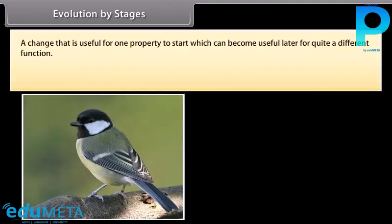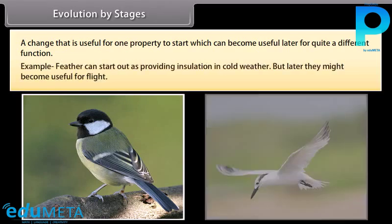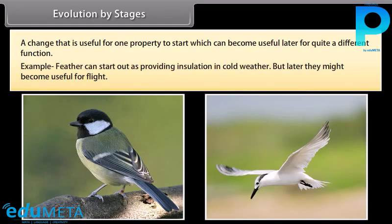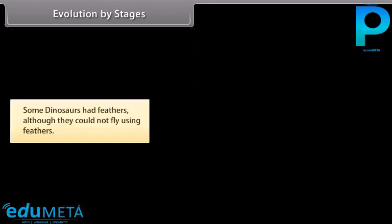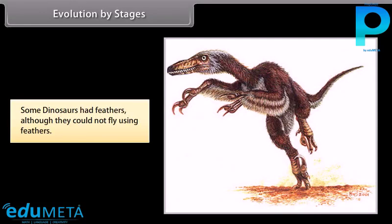Evolution by stages: a change that is useful for one property to start can become useful later for quite a different function. For example, feathers can start out as providing insulation in cold weather, but later become useful for flight. Some dinosaurs had feathers although they could not fly using feathers.